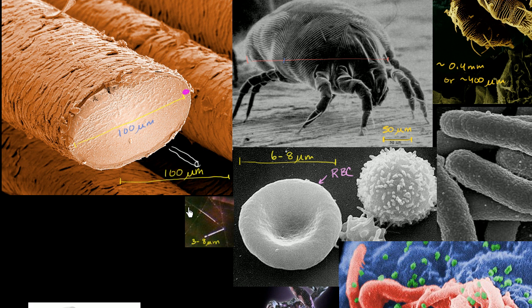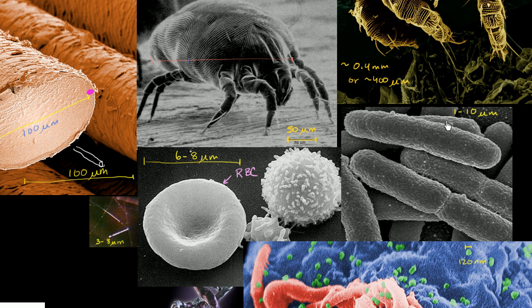At that same range, you start to have some of your larger bacteria. Bacteria can be anywhere from, and I'm speaking very roughly, 1 to 10 micrometers. So in general, they're smaller than cells. Most bacteria are smaller than most cells.